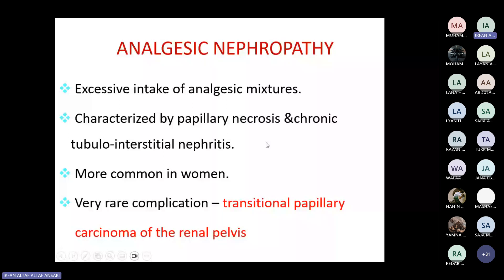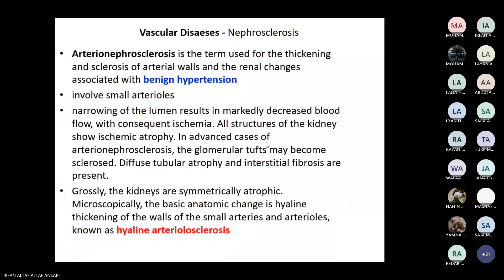Vascular diseases of the kidney include nephrosclerosis. Benign nephrosclerosis, or benign arterionephrosclerosis, is seen with benign hypertension. A person suffering from benign hypertension for a long period of time will have involvement of small arterioles, showing hyaline arteriosclerosis. Grossly, the kidney will be symmetrically atrophic with a leather-grain appearance. On microscopy, you see hyaline arteriosclerosis — this is the feature of benign hypertension.